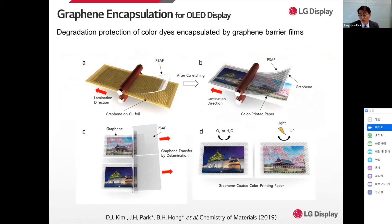The decolorization of paintings, photographs, and artworks is a common phenomenon related to the oxidative degradation of color dyes reacting with oxygen and water molecules. We reported the dry transfer coating of graphene barrier films on flexible substrates at room temperature using a roll-to-roll process to prevent the bleaching of color dyes, which can be widely used to protect various colorization and light-emitting materials, in collaboration with Seoul National University.